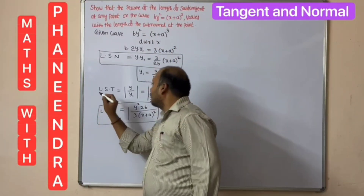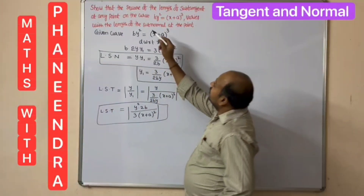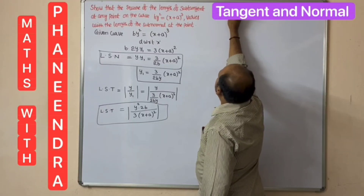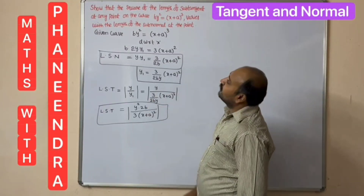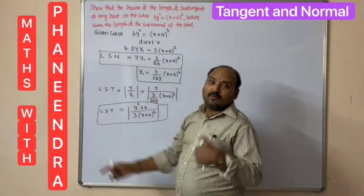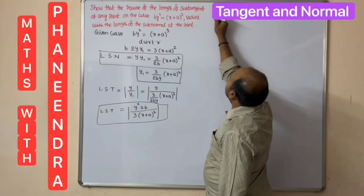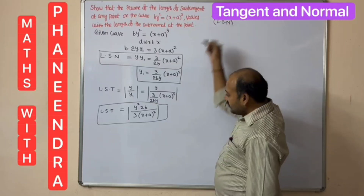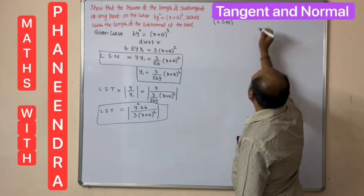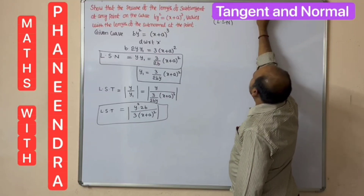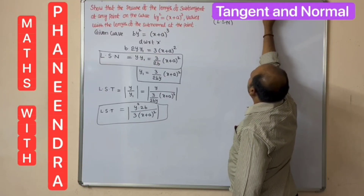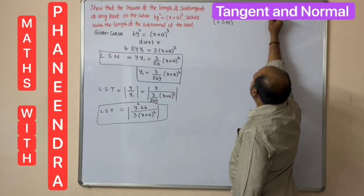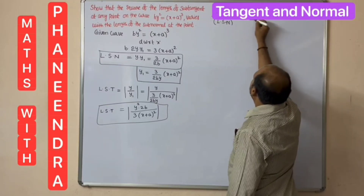We have completed the subtangent. Now the square of the length of subtangent must vary with length of subnormal — we need to prove this. So we compute (LSD)² / LSN. The length of subtangent is 2b·y² / [3(x + a)²], so we square this value.